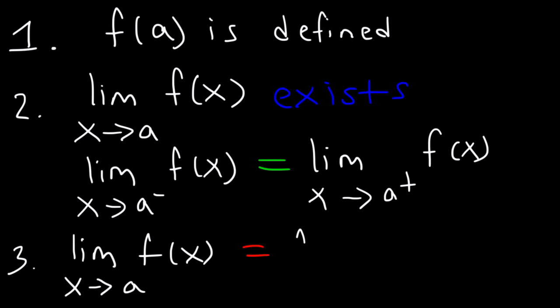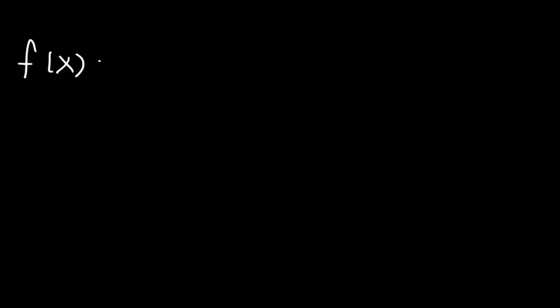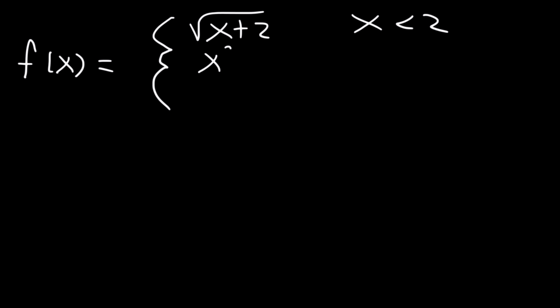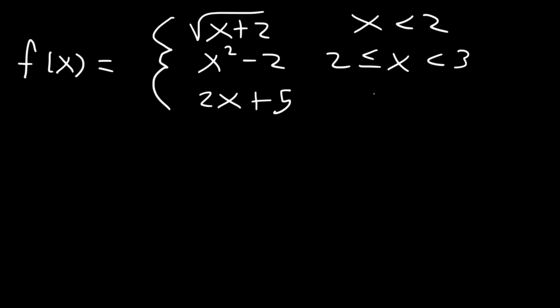That's the three-step continuity test. Let's apply it with an example. The function f of x is equal to the square root of x plus 2 when x is less than 2, x squared minus 2 when x is between 2 and 3, and 2x plus 5 when x is greater than or equal to 3. Prove that the function is continuous or discontinuous at x equals 2 and x equals 3.